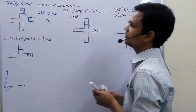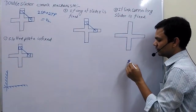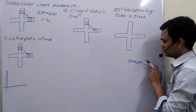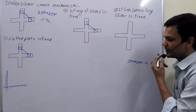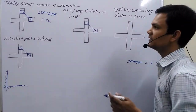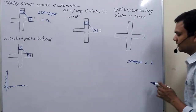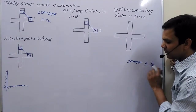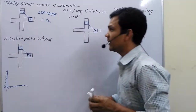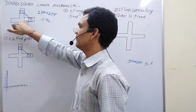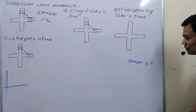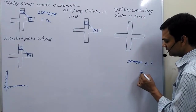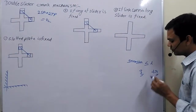In case of the double slider crank mechanism, the number of inversions is less than the number of links, because in any case — single slider crank mechanism, double slider crank mechanism, four-bar mechanism — the number of inversions is less than or equal to the number of links. In this case, by fixing any one of the sliders we fix the desired motion, so the number of inversions is three but the number of links is four.